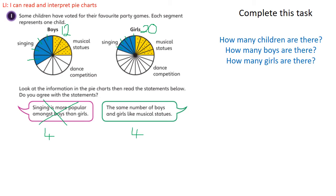The next part of the statement says the same number of boys and girls like musical statues. Let's have a count. How many boys like musical statues? We've got three boys. And what about our girls? We've got five girls. So is that statement true — the same number of boys and girls like musical statues? No, more girls like musical statues than boys.